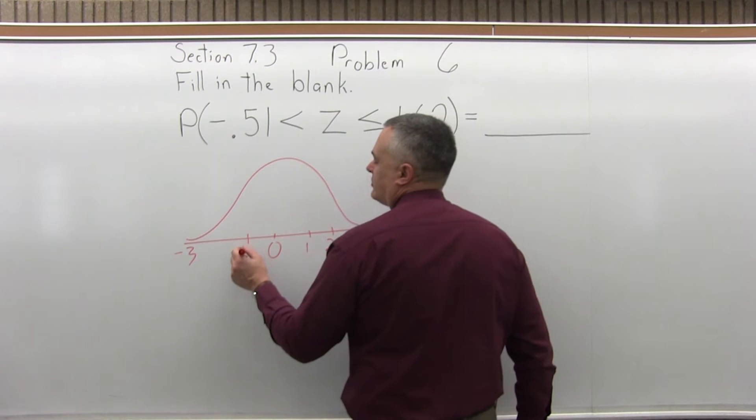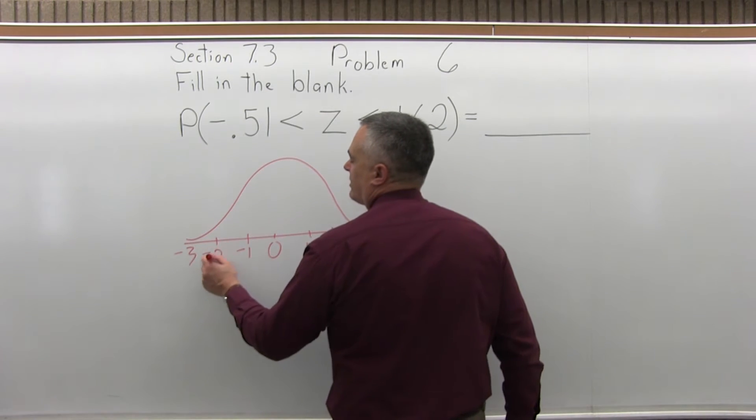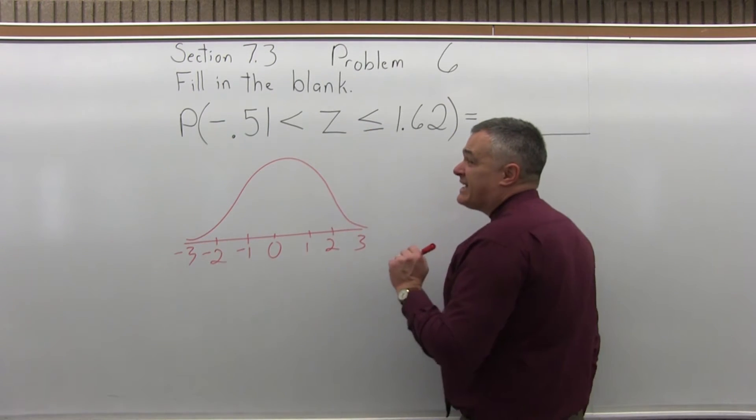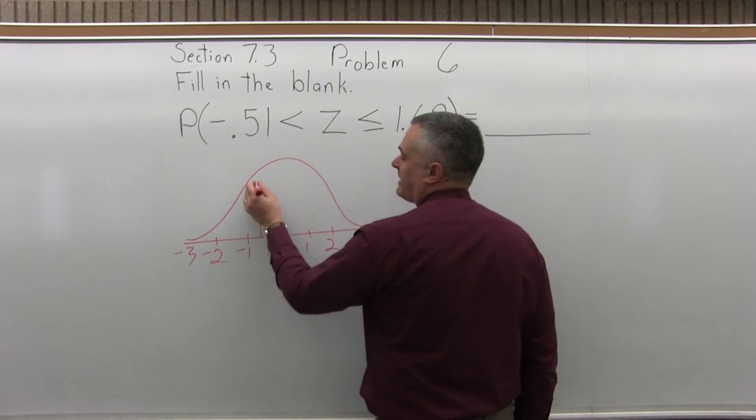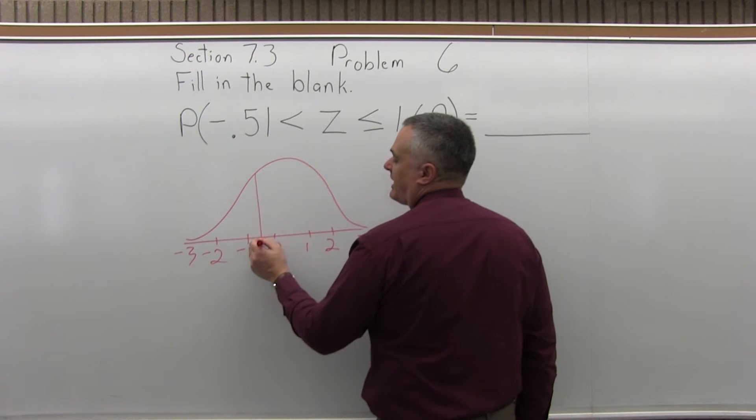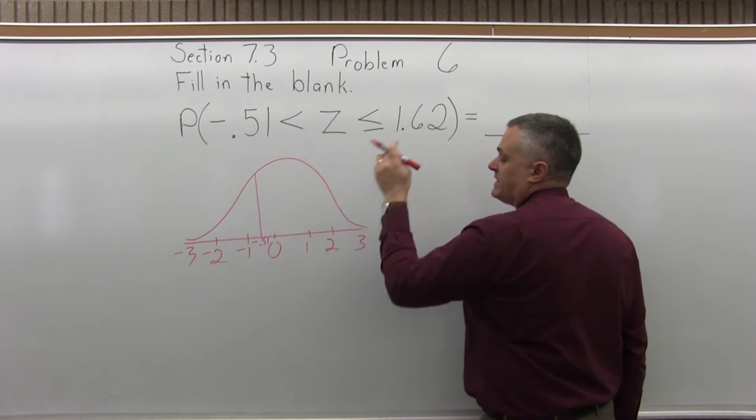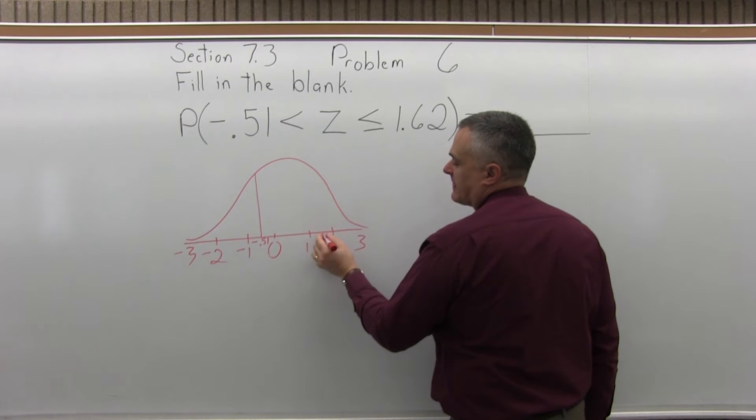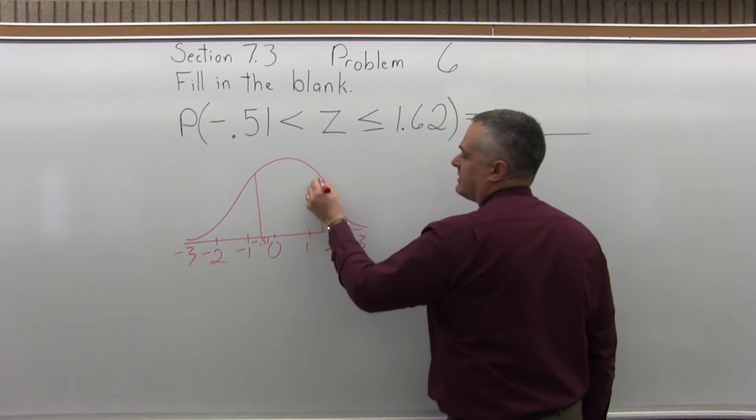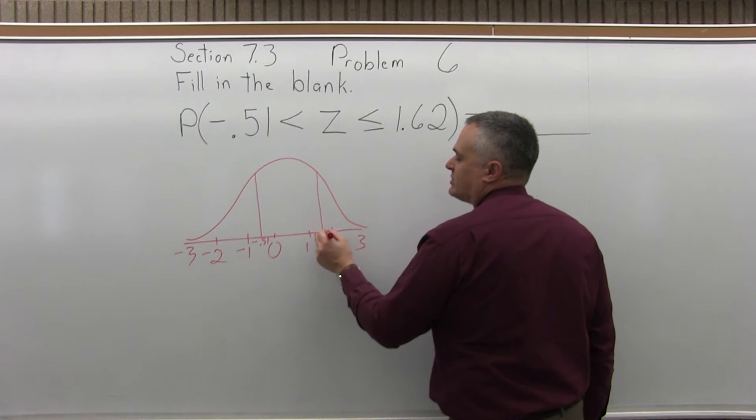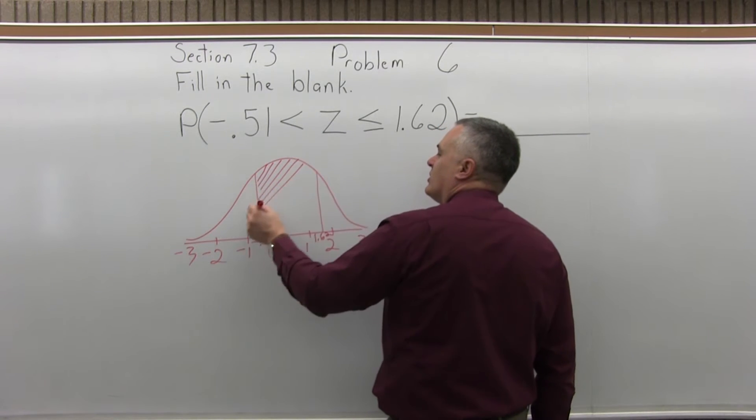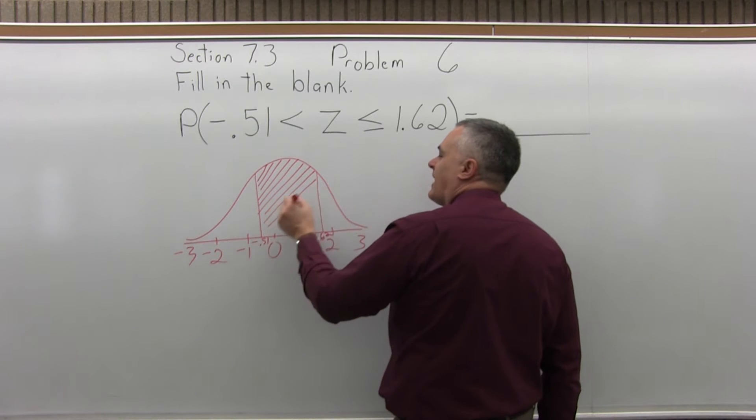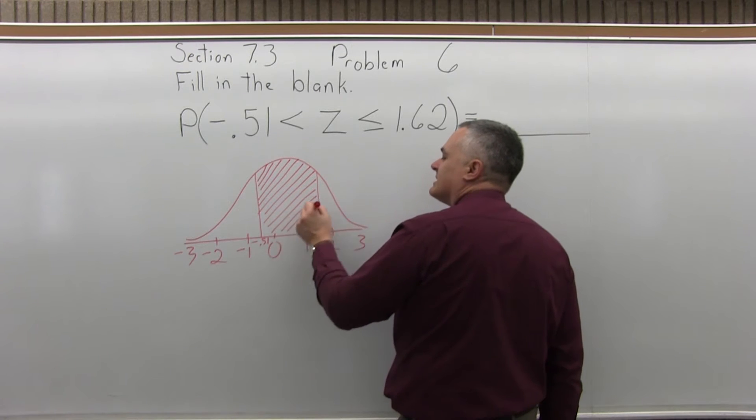So I'll set up a pretty standard bell curve. Now between -0.51, so here's negative, is zero and negative one, so about in between, there's -0.51. And 1.62, so between one and two is one and a half, go a little past that, 1.62. So we want to find the probability of being between those two values, -0.51 and positive 1.62.